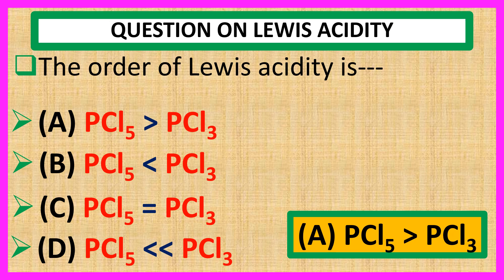Phosphorus in PCl₃ has oxidation state +3, while that in PCl₅ has +5 oxidation state. Thus, electronegativity of phosphorus in PCl₅ is greater than that in PCl₃. Hence PCl₅ will be a better Lewis acid than PCl₃. Thank you for watching this video.